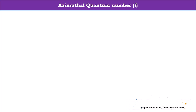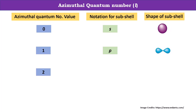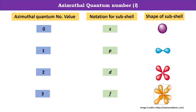Another piece of information provided by the azimuthal quantum number is about the shape of an orbital. If the value is 0, the notation is S and it represents a spherical shape. If the value is 1, it represents the P subshell, which has a dumbbell shape. For value 2, the D subshell has a cross-dumbbell shape. For value 3, the F subshell has a diffuse dumbbell shape.